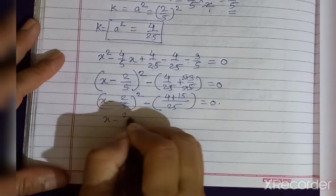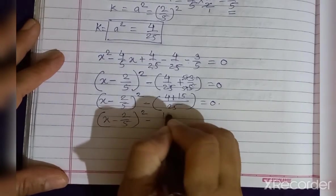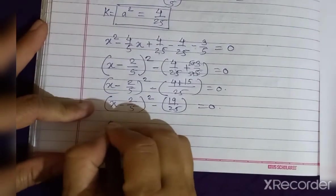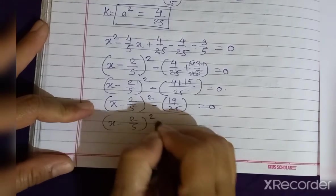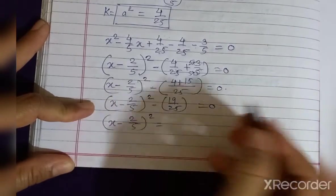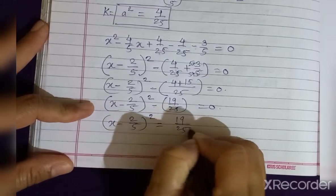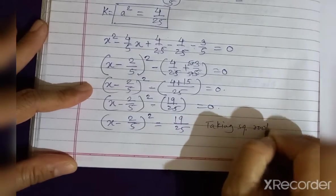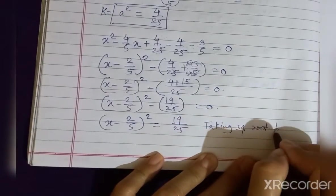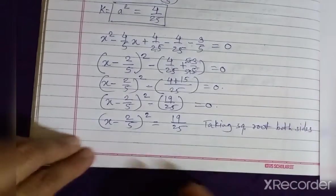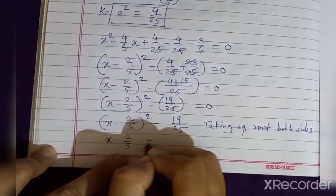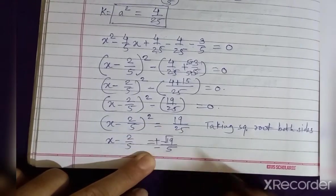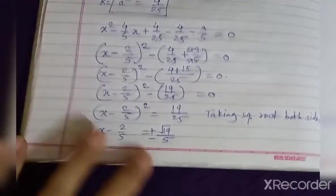So we have (x minus 2/5)² minus 19/25 is equal to 0. Taking 19/25 to the right-hand side: (x minus 2/5)² = 19/25. Now taking square root on both sides: x minus 2/5 is equal to plus or minus √19/5. Remember, whenever taking a square root we must take plus or minus.